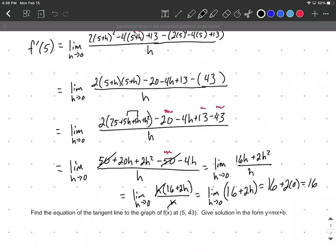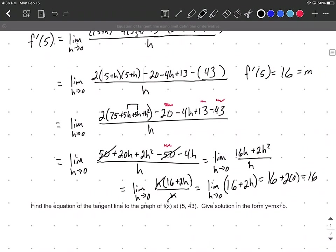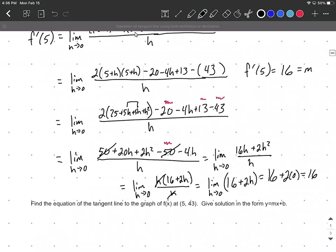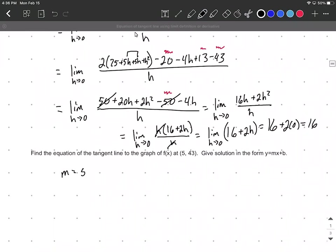So f'(5) = 16, and the derivative is the slope of the tangent line. We'll use this slope of 16 along with the point (5, 43) to find the equation of the line.